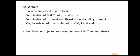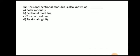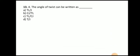Next question: a shaft may be subjected to the combination of bending moment M, torque T, and end thrust. Next question: the angle of twist is written as θ = TL / CJ. The bending equation is also very important: M/I = σ/y = E/R.